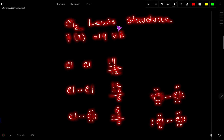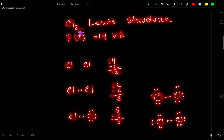To find the Cl₂ Lewis structure, or Lewis dot structure for Cl₂ (chlorine gas), we first need to find the total valence electrons in the chlorine molecule. Chlorine is an element of Group 7A, so it has seven valence electrons. We have two chlorine atoms, so we multiply by two, giving us 14 valence electrons in the chlorine molecule.